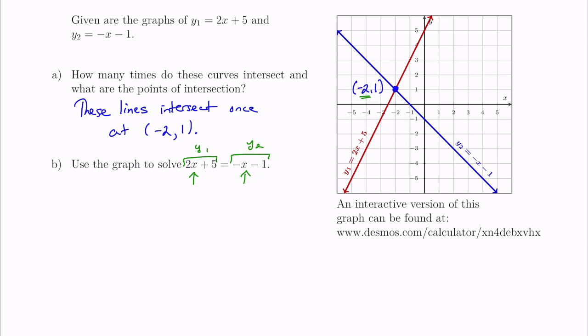To use the graph to solve the equation 2x plus 5 equals negative x minus 1, we simply identify this happens when x equals negative 2. We can write that as a solution set: the set containing negative 2. What we solved was an equation, but in this video we are going to take it a step further and solve linear inequalities using this graph.